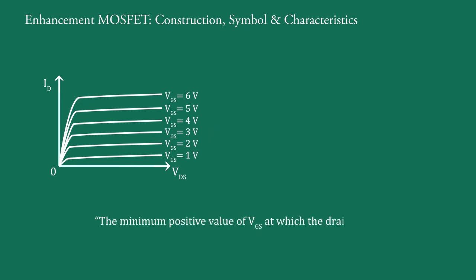The minimum positive value of VGS at which the drain current is established is called the gate source threshold voltage VGST or VT.